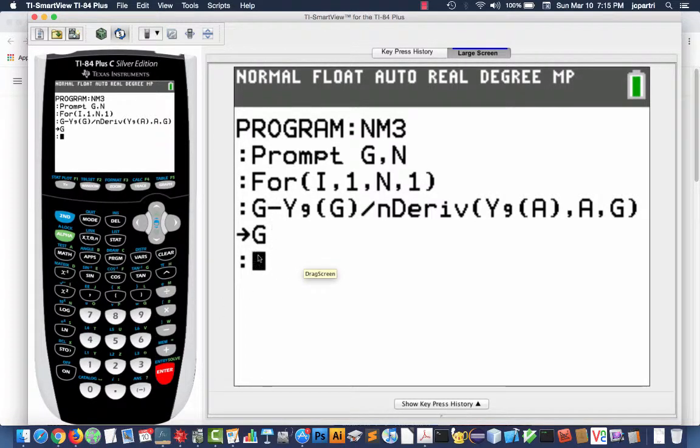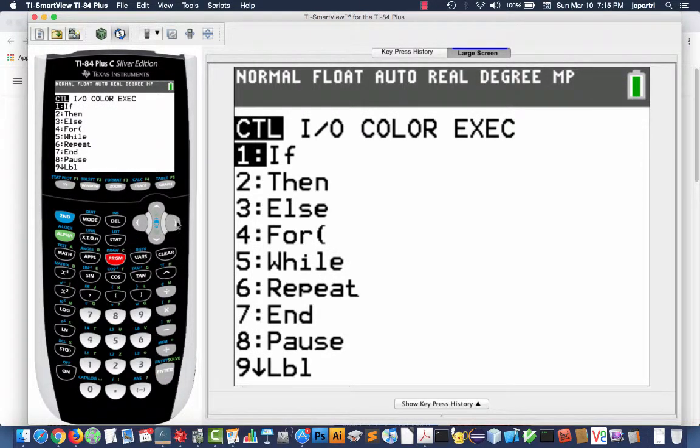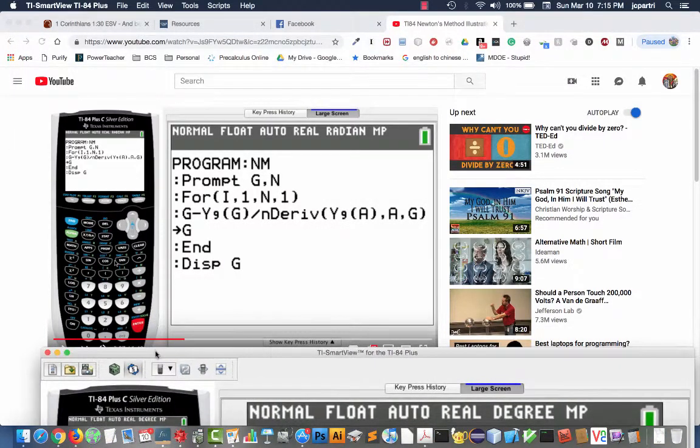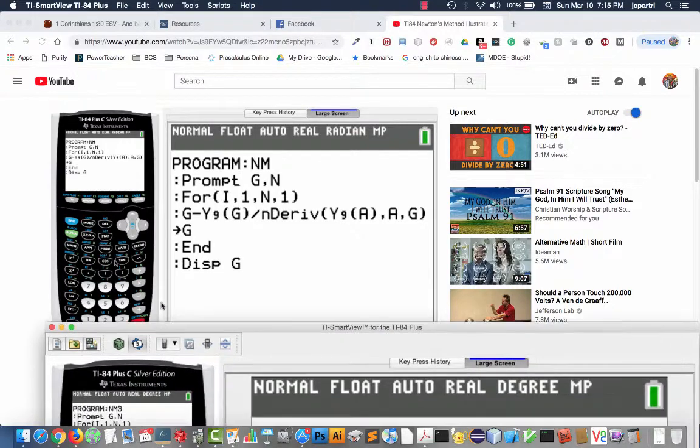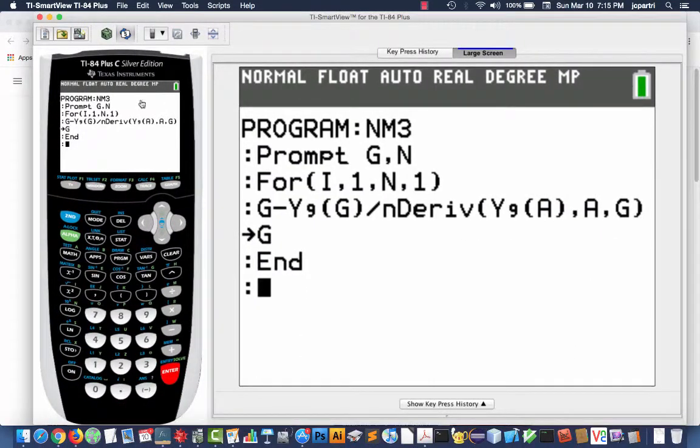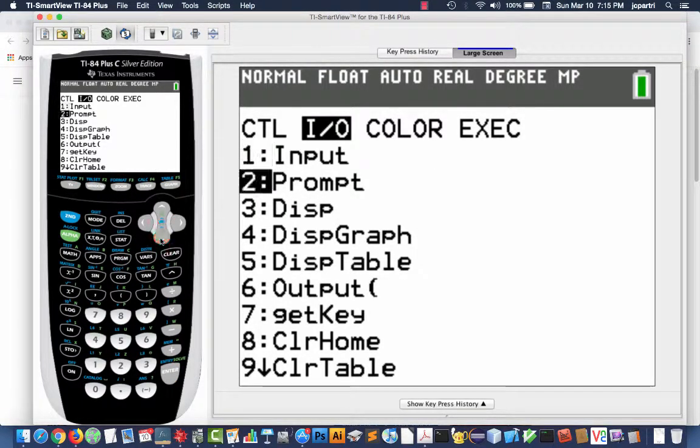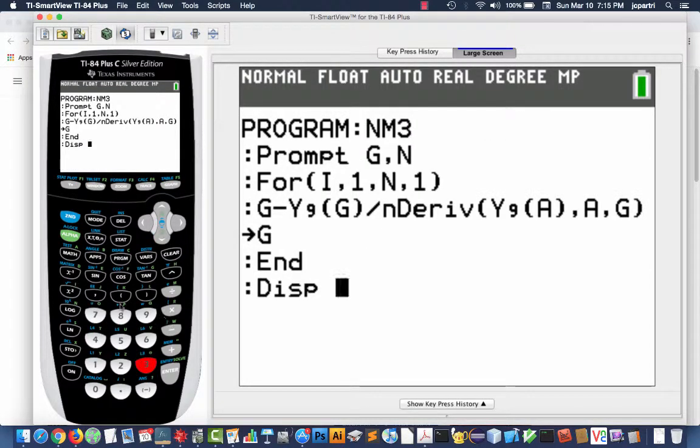Now, the for loop won't stop until I type the end statement. So, I hit the program key, I want to go to option 7 which is end, end is a control statement, then I hit enter. Last thing I want to do is display what the final value is, the approximation by Newton's method. Have I found a zero of the function? So, back to program, display is an input-output control. I can choose option 3, and I want to display my G.